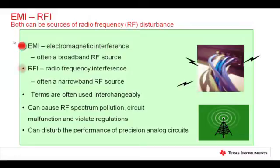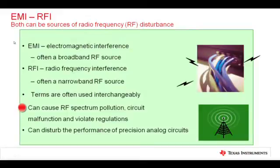EMI is a subset of radiofrequency interference, where radiofrequency interference may be an actual intended radiofrequency transmission. Often RFI is narrowband in nature, while EMI is broadband in nature. These terms are often used interchangeably. They can cause RF spectrum pollution, circuit malfunction, and violate federal regulations.